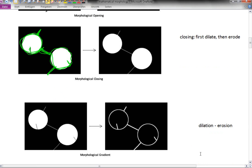Then there is a concept of a morphological gradient, where you compute both a dilation and an erosion and take the difference of the two. That is very useful for finding the outlines of shapes.